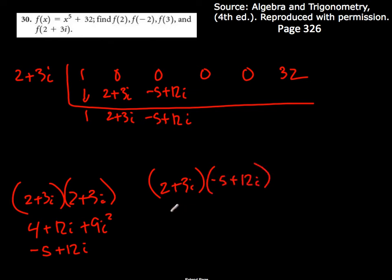So it'll be negative 10, which is negative 10. This would be plus 24. This would be minus 8, so that's plus 16i. Then 3i times, that'd be 36i squared, which would be minus 36.